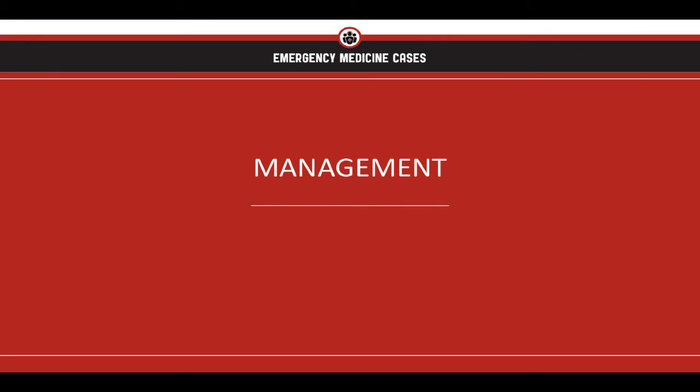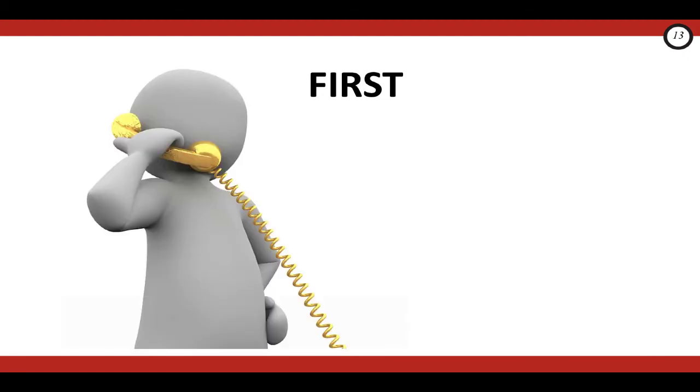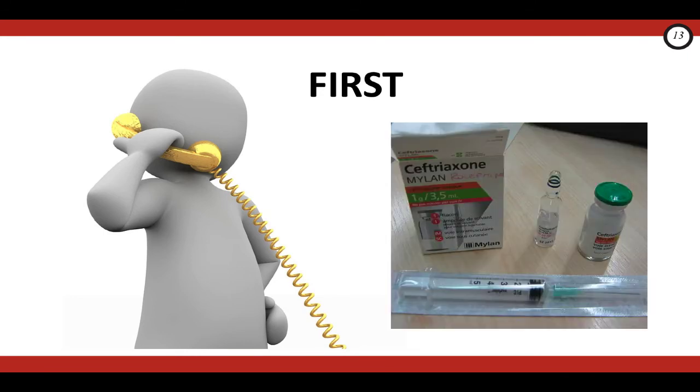Now, how do we put all this together to manage our patient? First things first — even though this is a talk on congenital heart disease emergencies, your first actions have nothing to do with prostaglandins. If you haven't already, the first most critical thing to do is call for help and get on the phone with a consultant. Then start empiric antibiotics early, because you don't know for sure that this baby's not septic.